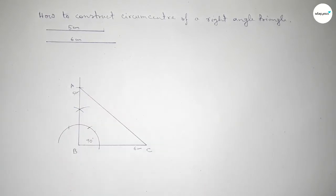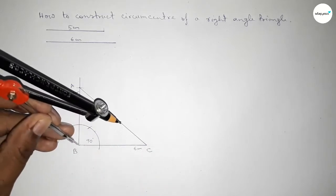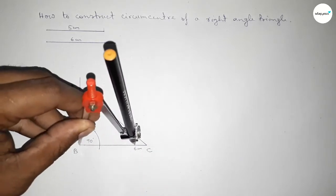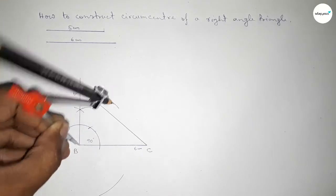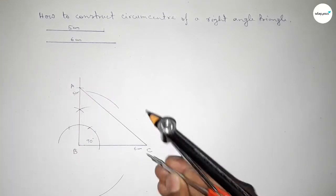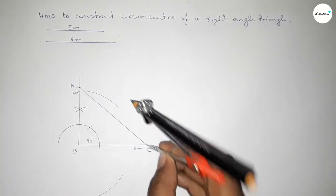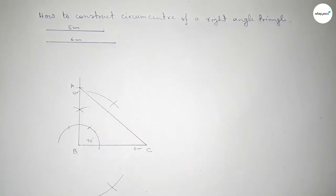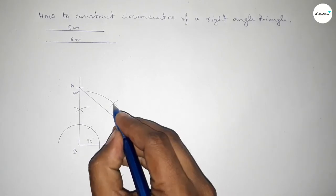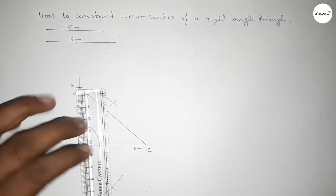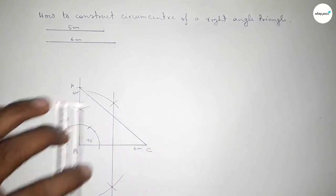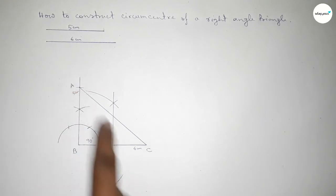Now we have to bisect the line BC. Taking greater than half of BC, draw an arc. With the same length, put the compass at the other end and cut arcs at two points. Both arcs intersect at two points — join this perpendicular bisector.